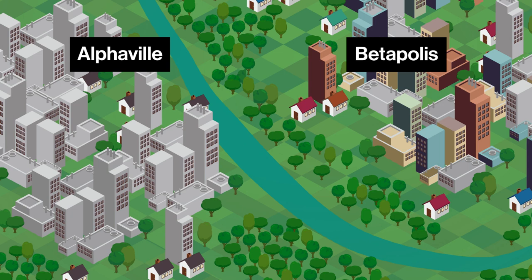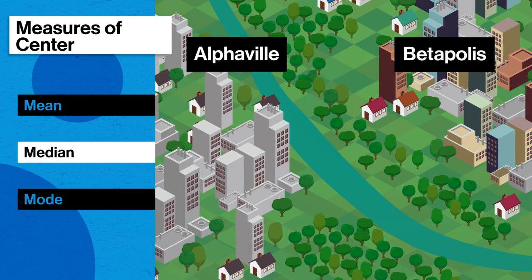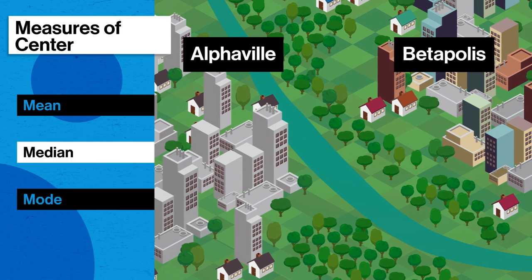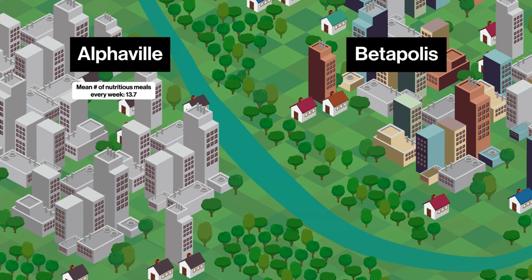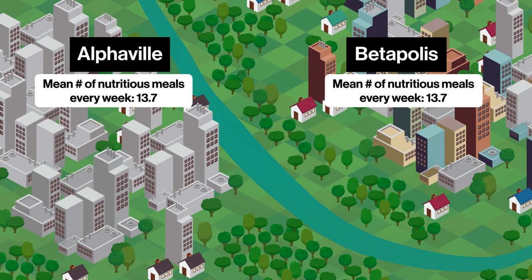Last episode, we saw how to summarize data using measures of center, like the mean, median, and mode. And we might find their populations consume the same mean number of nutritious meals every week. But despite this, each city could still have totally different situations.